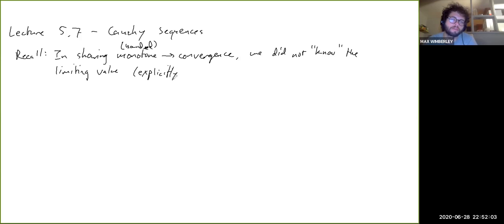Well, not very explicitly, depending on how you define explicitly. I mean, we were able to describe it as the supremum or infimum of the values in the sequence, which gives us sort of an unambiguous idea of what it is, but we did not know it numerically.